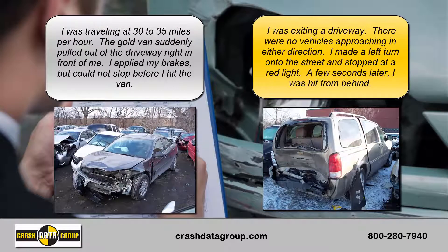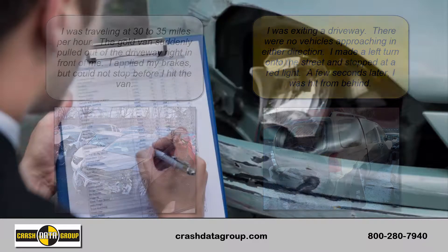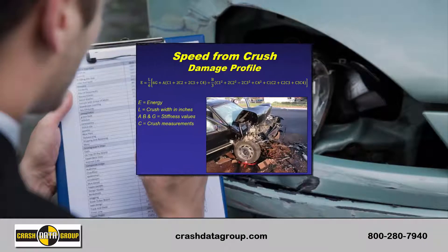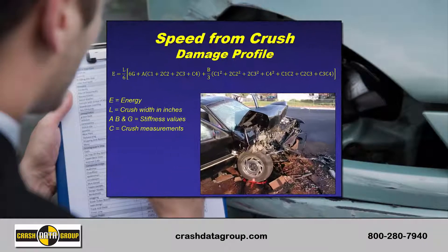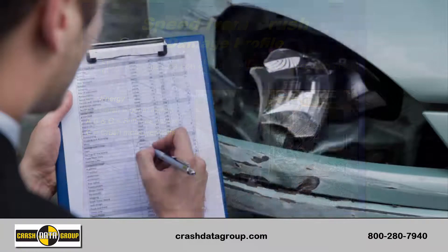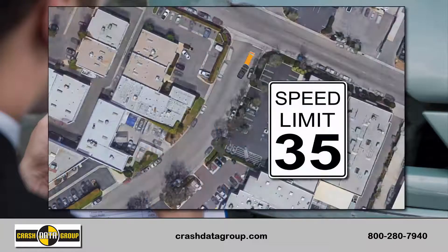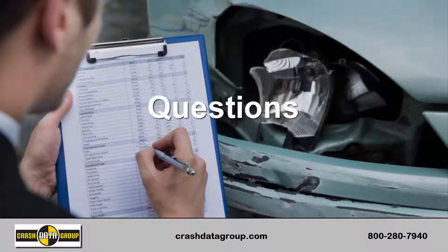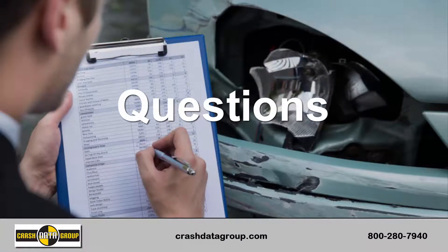The driver of the gray car said he was traveling at a speed of 30 to 35 miles per hour when the gold van suddenly pulled out of the driveway directly in front of him. He applied his brakes but was unable to avoid running into the back of the van. All you have are those statements and pictures of damage to the vehicles. Using traditional accident reconstruction methods, a reconstructionist could perform a speed from crush analysis, which may provide an impact speed range of between 30 to 37 miles per hour. Remember, the speed limit is 35 miles per hour. Still have questions? There's got to be more to this story.